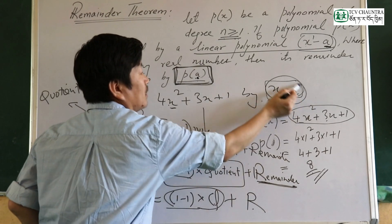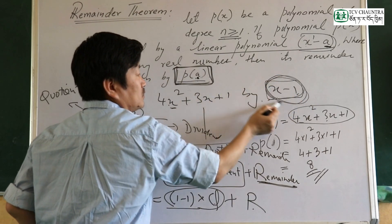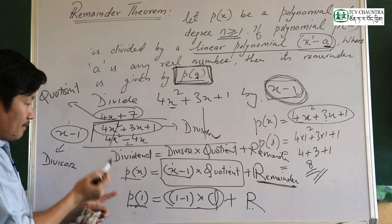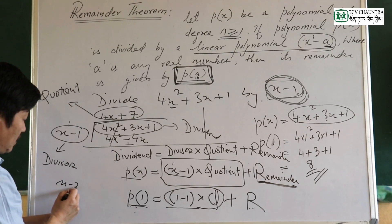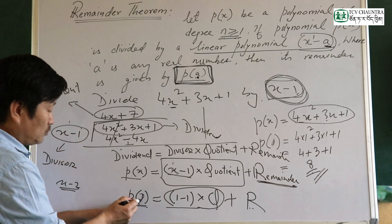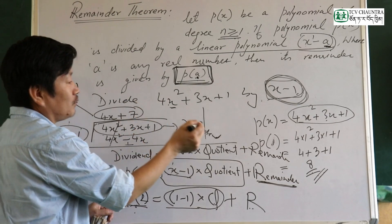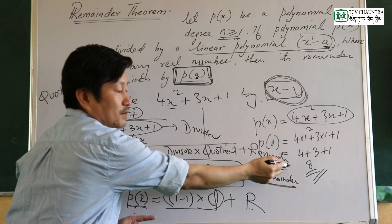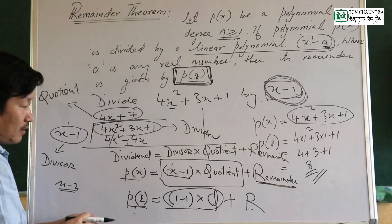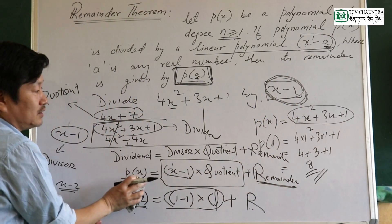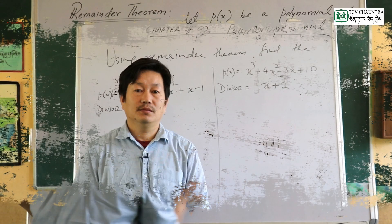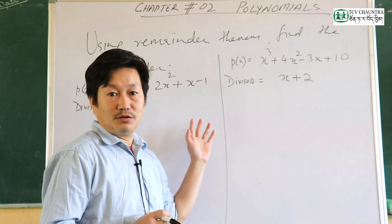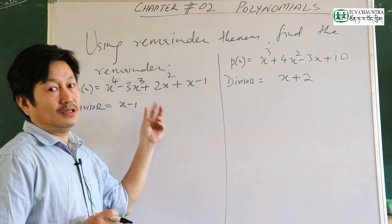Divisor x minus 1 means a equals 1, so remainder equals p of 1. If divided by x minus 2, remainder equals p of 2. When we call the linear polynomial the divisor, this is the remainder theorem: the remainder when dividing by x minus a equals p of a.